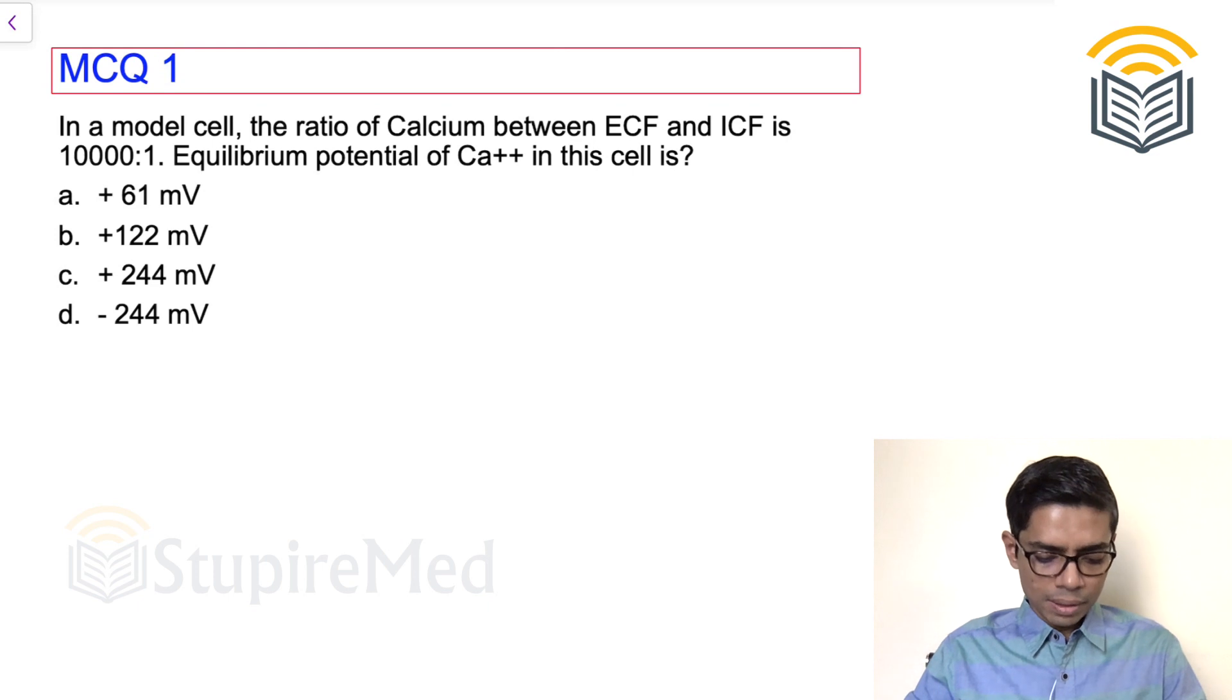Question number 1: In a model cell, the ratio of calcium between ECF and ICF is 10000 is to 1. Calculate the equilibrium potential of calcium.